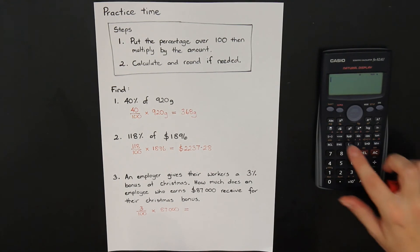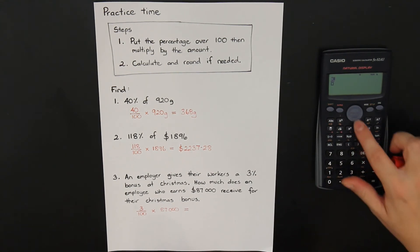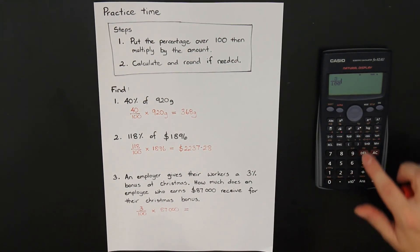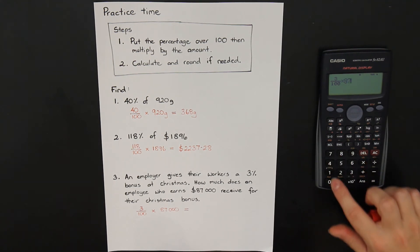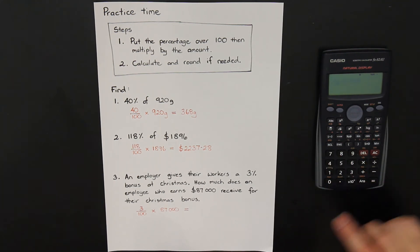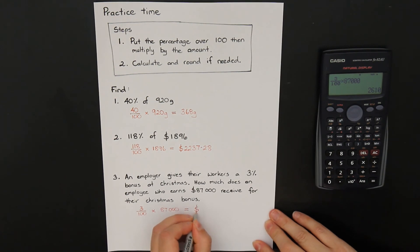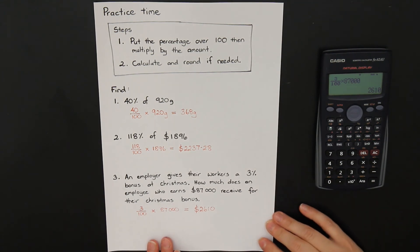On the calculator, fraction button, 3 over 100 times by 87,000. So they get a Christmas bonus of $2,610. There it is. That is how you find a percentage of an amount.